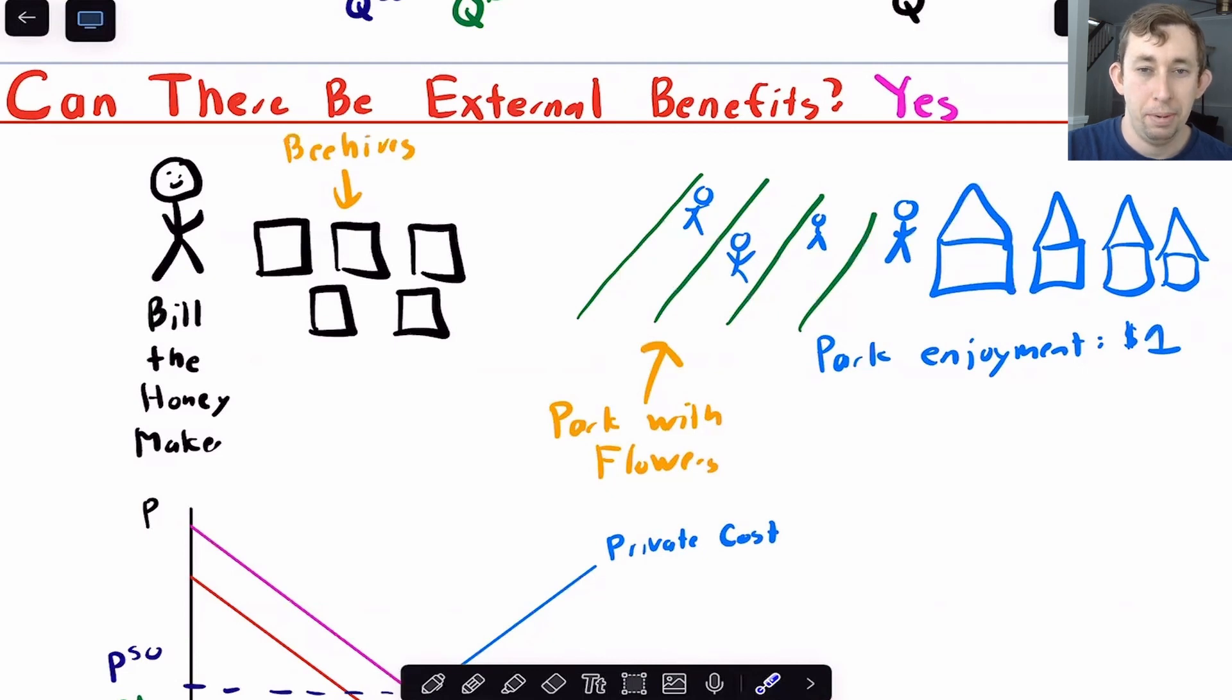That's exactly right. If Bill is having a positive impact on the society around him, we want Bill to make more honey. Now let's show that in a graph.